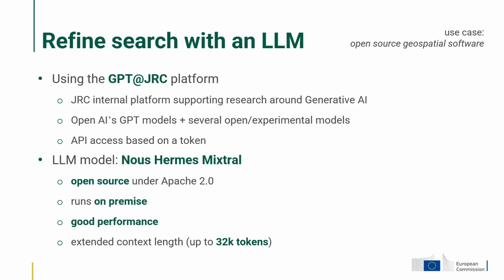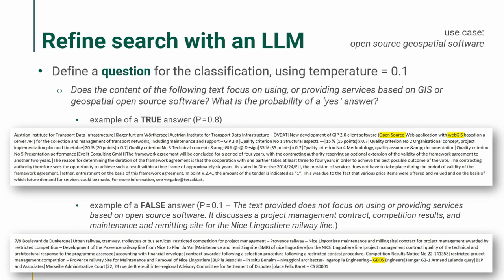Something good about this platform is that even for GPT models, there is an agreement under which all results generated stay at the JRC and are not reused by OpenAI. This provides very good performance and allows us to use a lot of tokens, which is very suitable for our purpose since the database is huge. We use a temperature equal to 0.1 — the lower the temperature, the lower the chance of random results — so we try to have robust results.